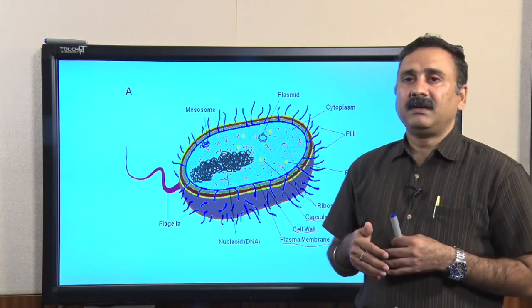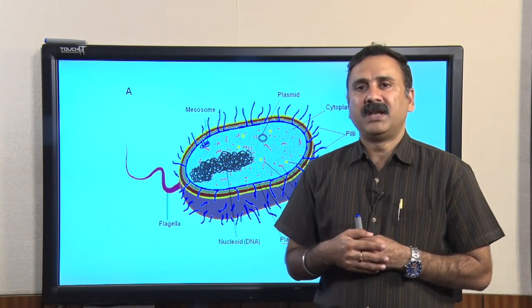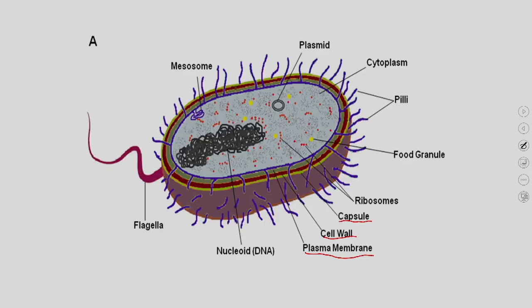The plasma membrane is a semi-permeable membrane inside the cell, made up of lipids and proteins. Inside the cell, you have the cytosol and the genomic DNA, present in the form of a single chromosome. Apart from genomic DNA, you also have extrachromosomal material called plasmids. These plasmids are exchanged between different bacterial species for many purposes — for example, they are used to provide resistance against antibiotics.